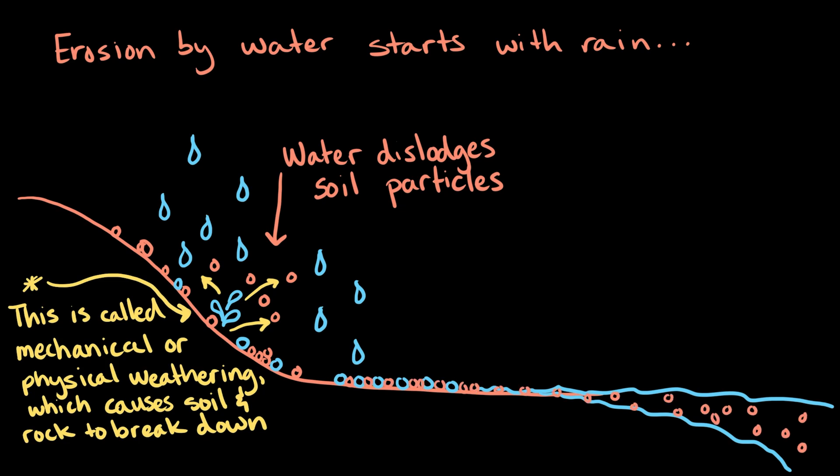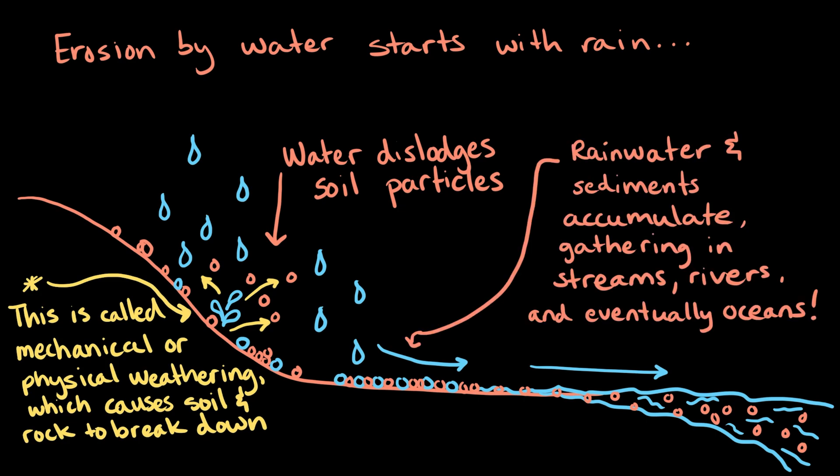And, as water flows down the slope of hills and mountains, it transports sediment along with it. Eventually, water gathers into small streams and then rivers, carrying more and more sediment. In fact, through erosion, water carries away billions of tons of sediment to the oceans every year.